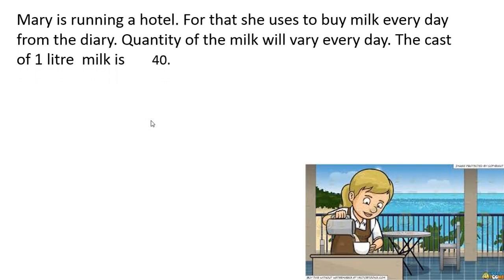Next example: Mary is running a hotel, for that she uses to buy milk every day from the dairy. The quantity of the milk will vary every day. The cost of one liter milk is rupees 40. She used to buy milk from the dairy, and one liter milk is 40 rupees. One day she can buy two liters, three liters, four liters. That number of quantity will vary. So how to express this in an algebraic equation?